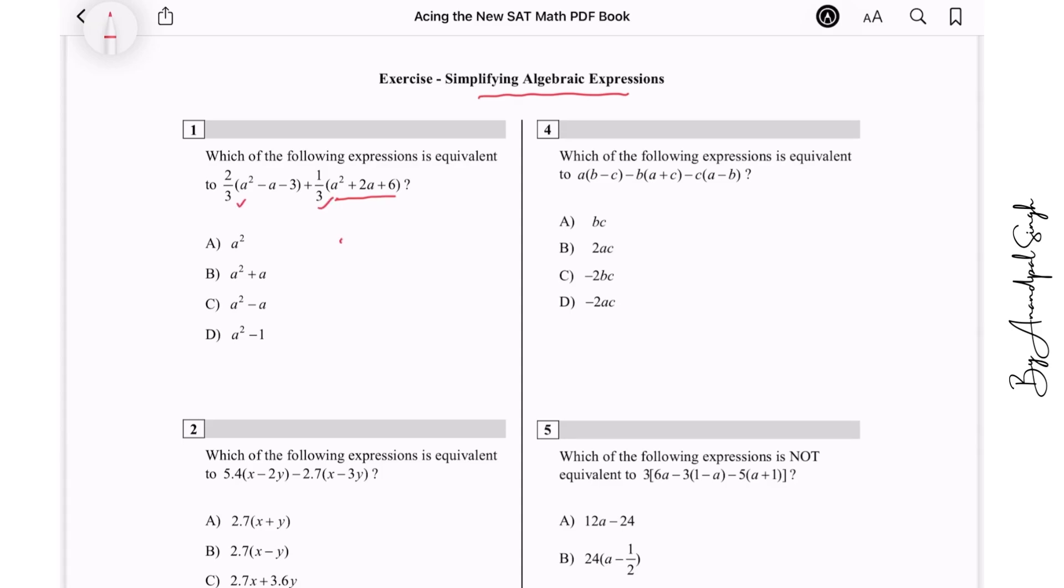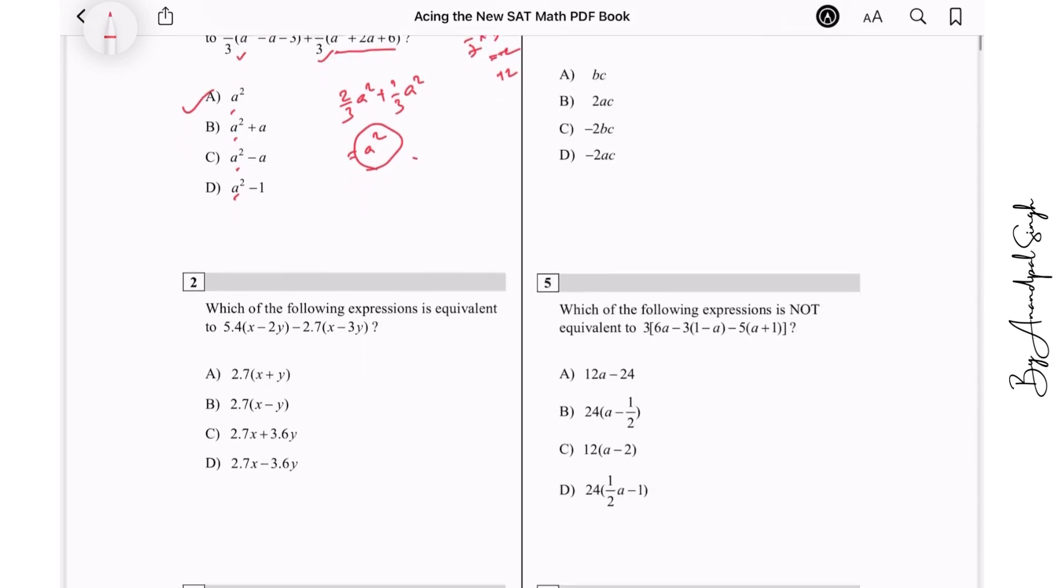So 2/3 a² + 1/3 a² simply gives you a², so it is available in all of the following expressions. Then we take the second one, minus 2/3 a and plus 2/3 a, which cancels out. And then 2/3 times minus 3 gives you minus 2, and 1/3 of 6 also gives you plus 2, so this also cancels out. So only a² is left, so I will go with option number A.